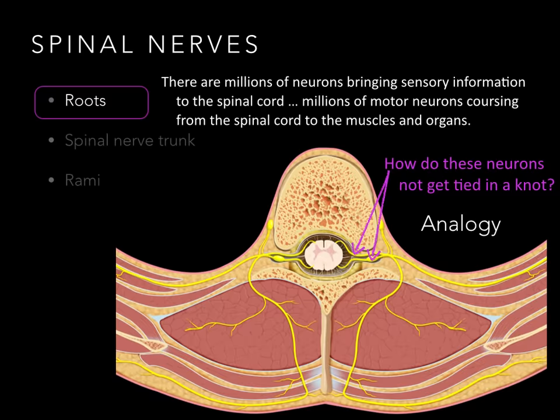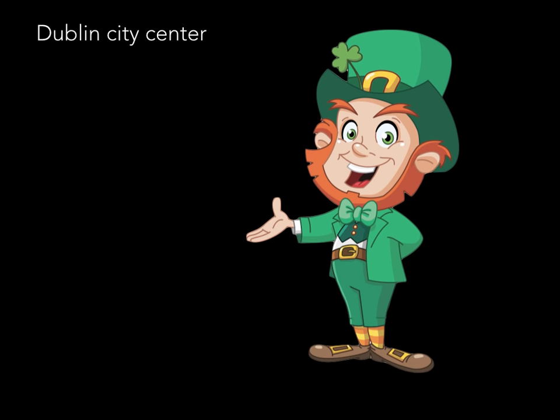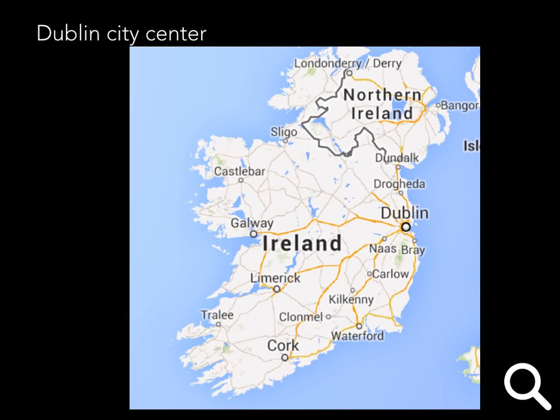Let's use an analogy — Dublin City Center. I lived in Dublin for a couple of years; I love it. There's a cute little leprechaun. So here we have a picture of Ireland, and we're going to zoom in to Dublin, the capital of Ireland. Dublin is a really old city — people going back millennia. When they first had the city and you look at the city center, they didn't build roads for big lorries, really big trucks.